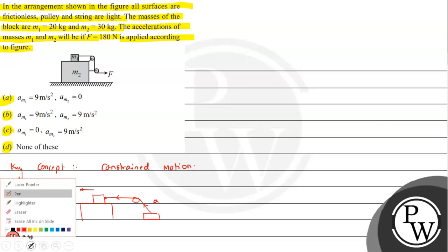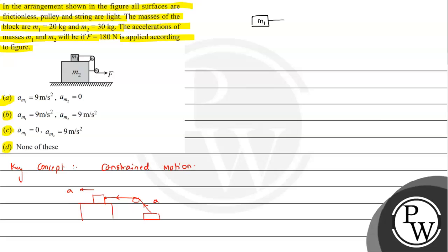So let's analyze. If we talk about M1 block, on M1 block we can see that the string is connected, the string has force in this direction, this direction, and this direction. So on M1 mass we can see force. By Newton's first and second law we can say F equals M1 times acceleration. So the acceleration of M1 we can calculate as F upon M1. F is 180, M1's mass is 20, so this is 9 m/s².